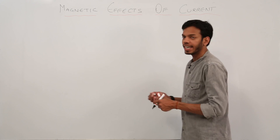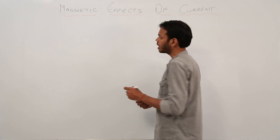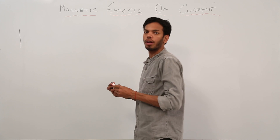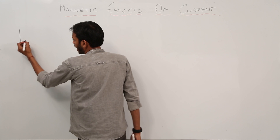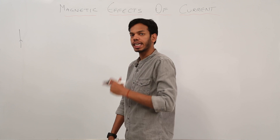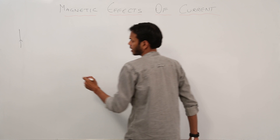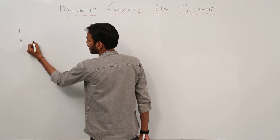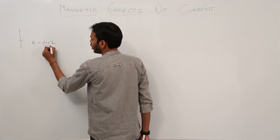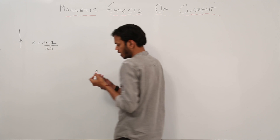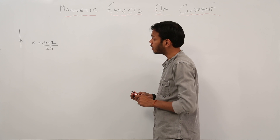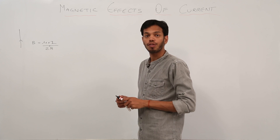Hello guys, welcome back to Magnetic Effects of Current. In our last class we did two important formulas based on Biot-Savart's law application. Number one, we found out the magnetic field due to a straight current-carrying conductor for infinite length — that was a special case. The magnetic field formula was B equal to mu-naught I upon 2R.